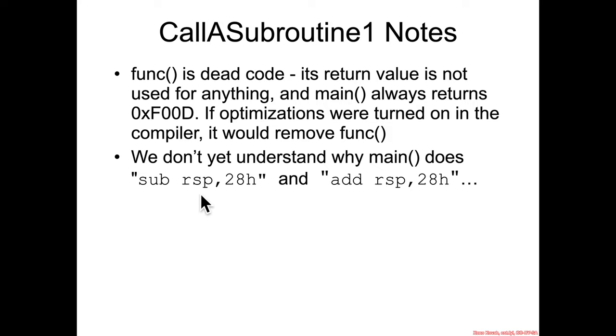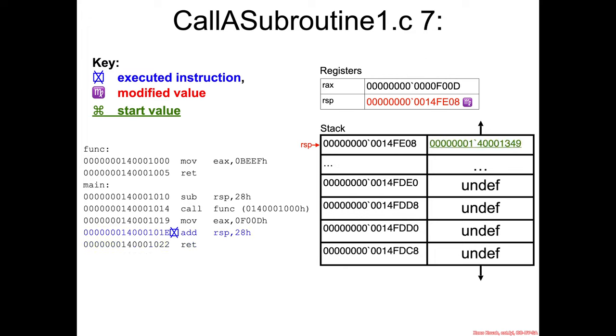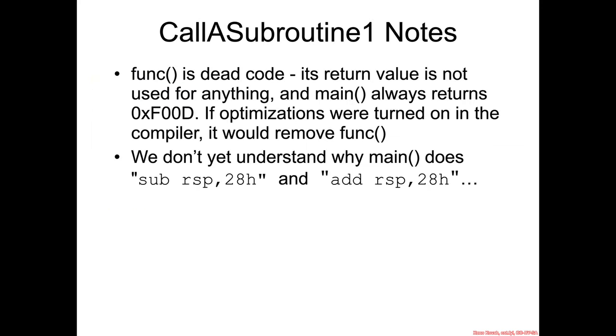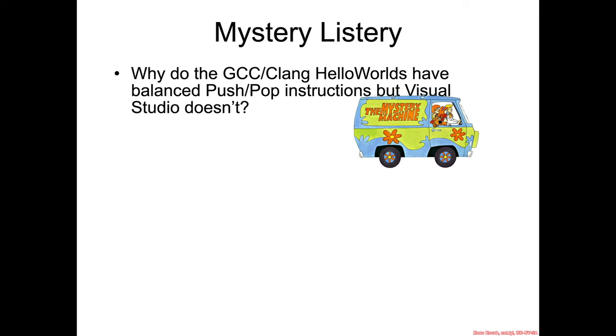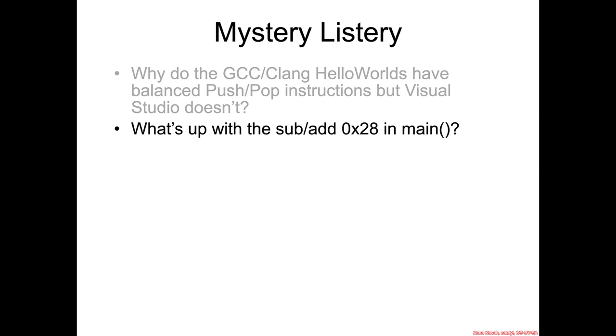Also, we don't really know why it did that sub RSP 28 and add RSP 28. Didn't seem to have a lot of point to it. You could imagine that when it was right here, it could have just not done that and then allowed main to push a return address here instead of jumping down and jumping back up. So we're going to consider that yet another mystery for our mystery list. And we'll come back to that later on after we've learned a little bit more about how function calling works.